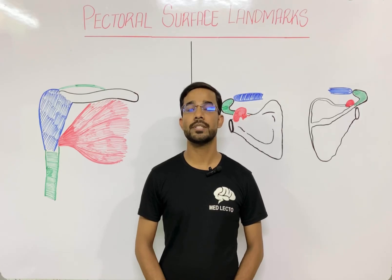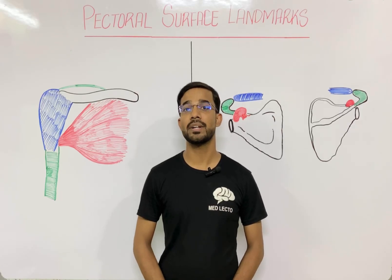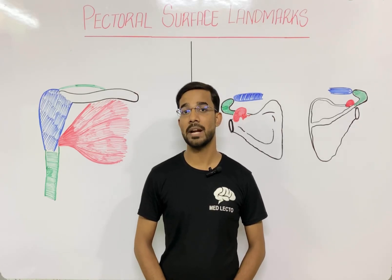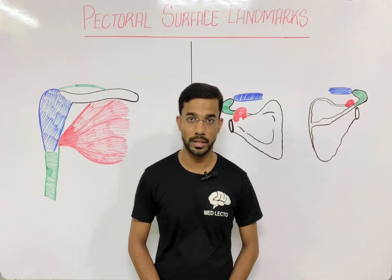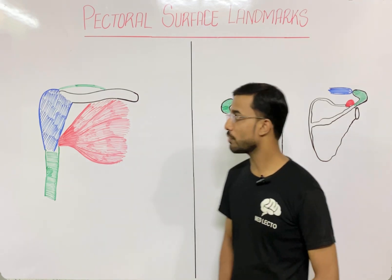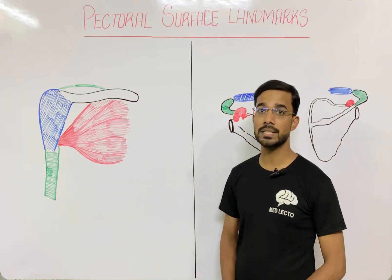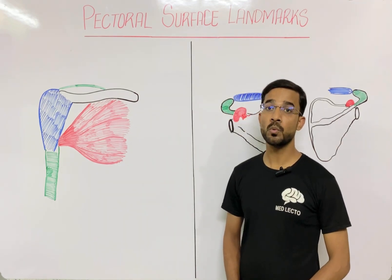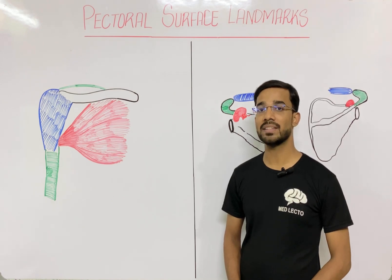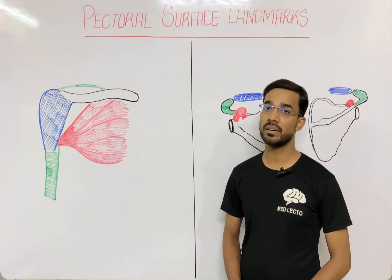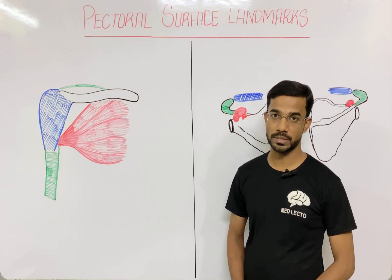In this lecture we are going to discuss different surface landmarks of the pectoral region. First of all we will discuss the supraclavicular fossa and the infraclavicular fossa.